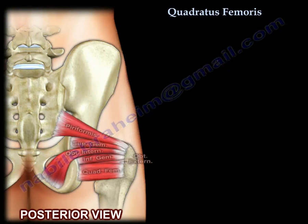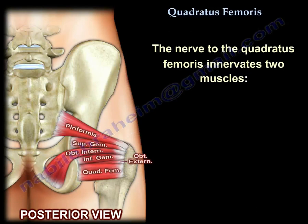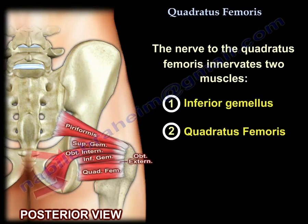The nerve to the quadratus femoris innervates two muscles: the inferior gemellus and the quadratus femoris muscle.